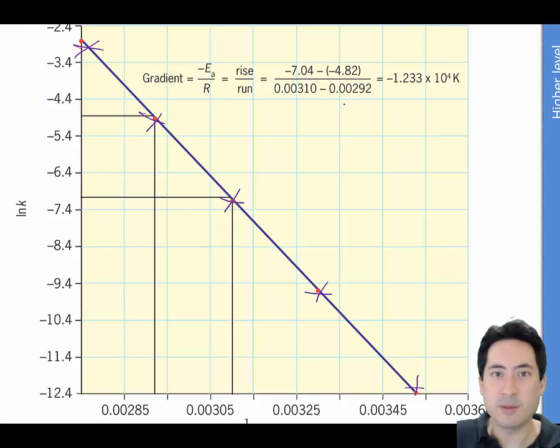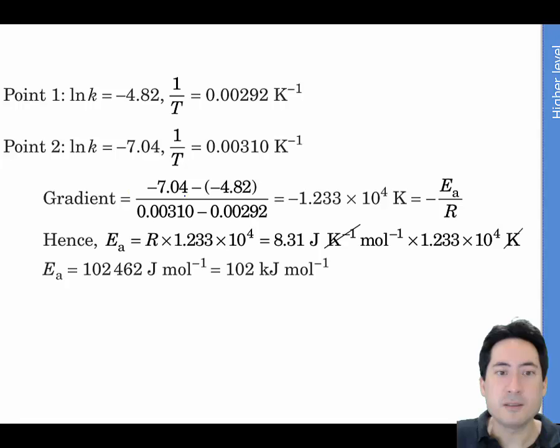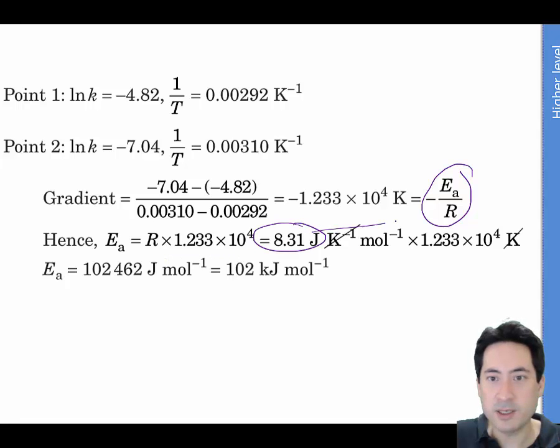Once you've done that, then you can just grab any two of those points. That will give you your gradient. And then you can substitute those numbers in here. And so what you have here is the gradient here. Substitute the gas constant in here. There's the gas constant. And the gradient that you worked out is here.